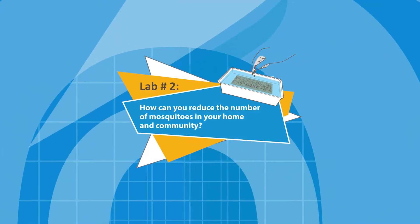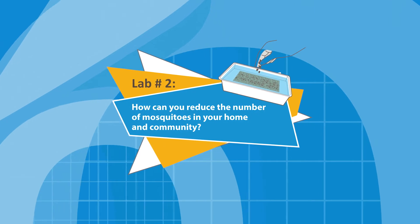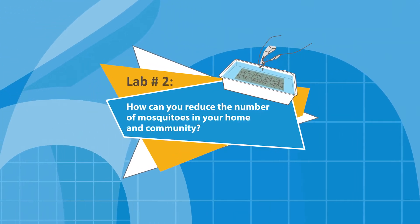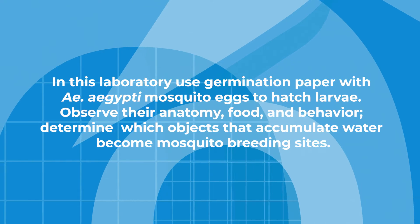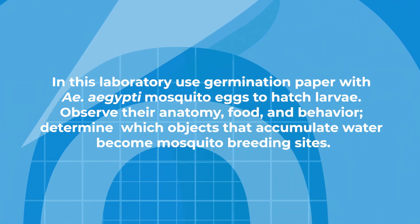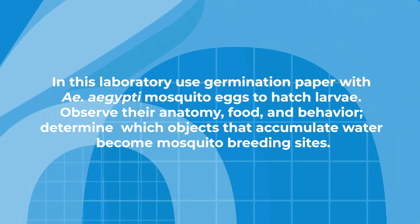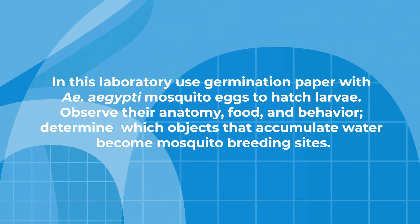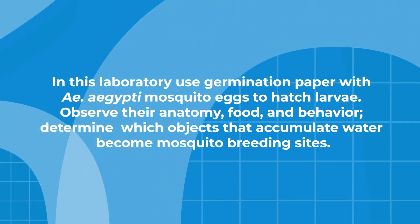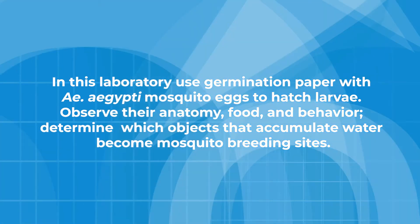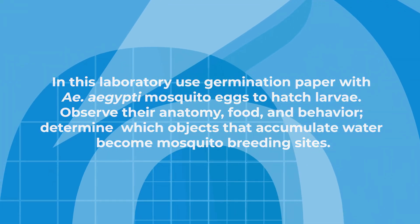Lab number two: How can you reduce the number of mosquitoes in your home and community? In this lab, use germination paper with Aedes aegypti mosquito eggs to hatch into larvae. Observe their anatomy and how they eat and behave. Determine which containers accumulate water and become mosquito breeding sites.